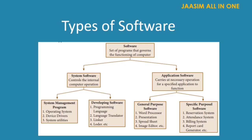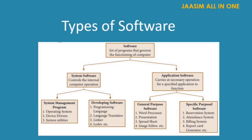Types of software — look at the chart. Software is divided into two types: system software and application software. System software is also divided into two types: system management programs and developing software. Application software is also divided into two categories: general purpose software and specific purpose software.